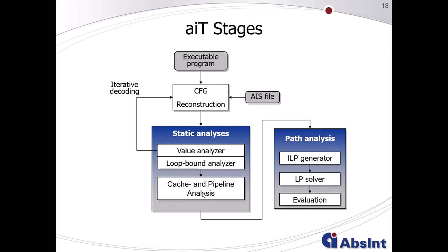Then we have the microarchitecture analysis. AIT has an internal timing model of the underlying hardware — the cache and pipeline architecture — that determines the worst-case execution timing of each individual decoded instruction, taking the value analysis information about effective addresses into account. After this second stage, we know the worst-case timing caused by each individual instruction, so that in the last stage we can search for the longest path leading to the highest timing — the worst-case execution time.